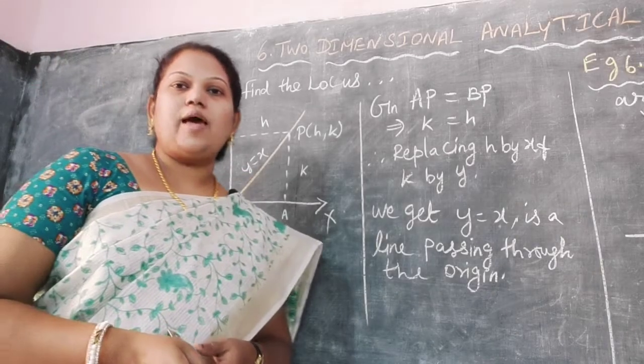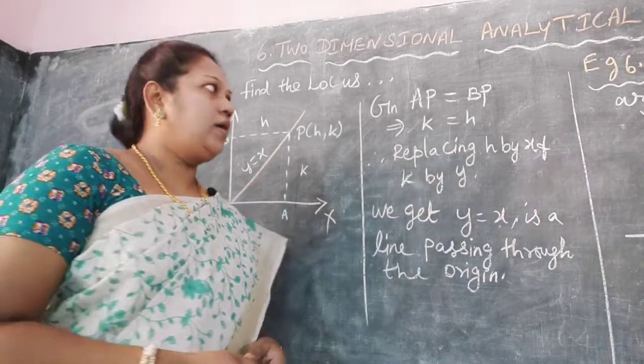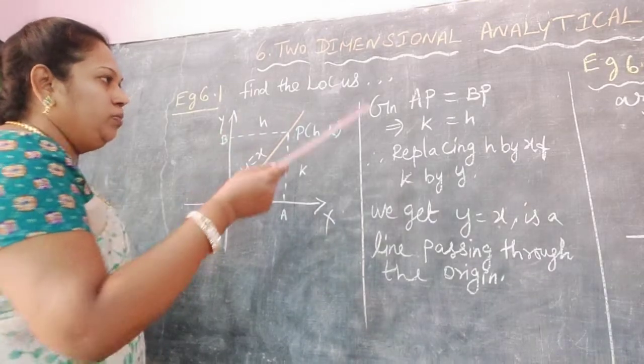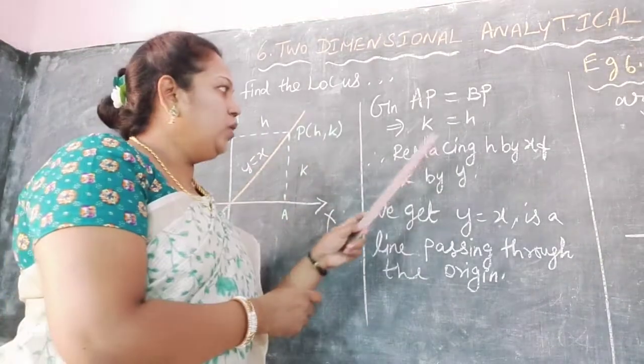Given that the distance from the x-axis equals the distance from the y-axis, therefore AP equals BP. Substituting the values, we get k equals h.